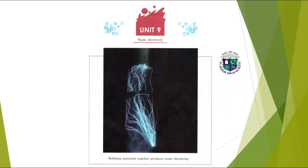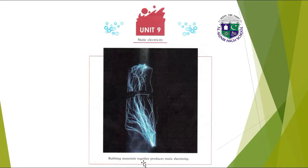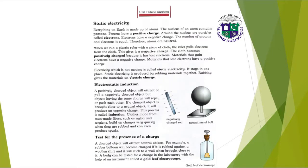Topic is static electricity. Rubbing materials together produces static electricity. Everything on earth is made up of atoms. The nucleus of an atom contains protons. Protons have a positive charge. Around the nucleus are particles called electrons. Electrons have a negative charge. The number of protons and electrons is equal.